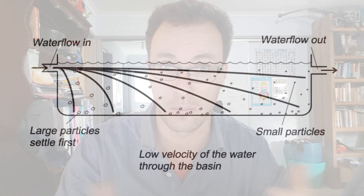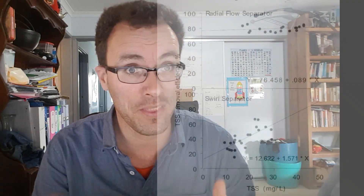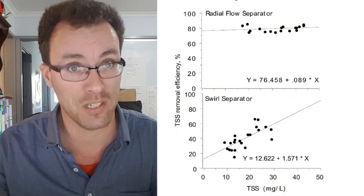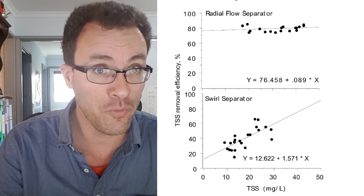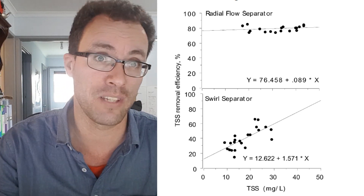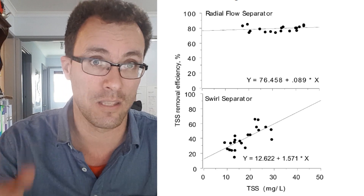They've got three big advantages. The first is that they're so much more compact than a standard settling basin — they take up a lot smaller footprint. The second reason is that they're much more effective. There are a number of other settling-type devices designed to take up less room than a settling basin, and of them, the radial flow settler is the best.